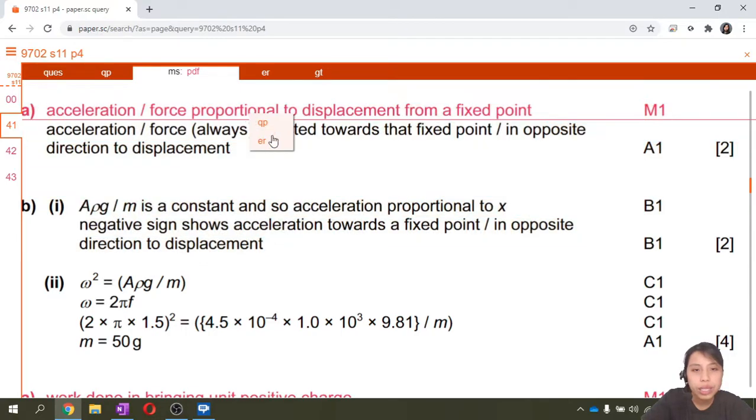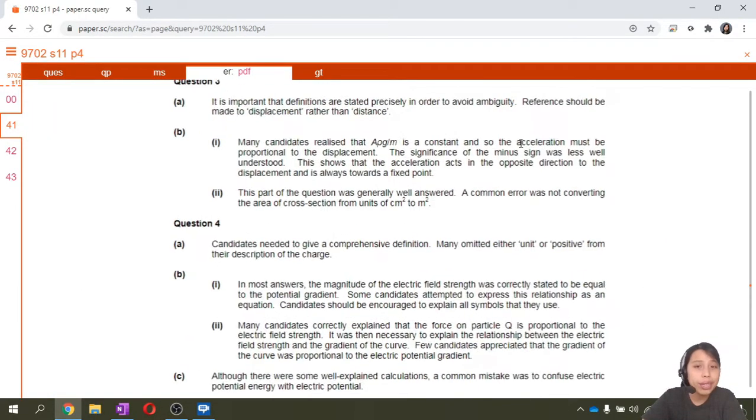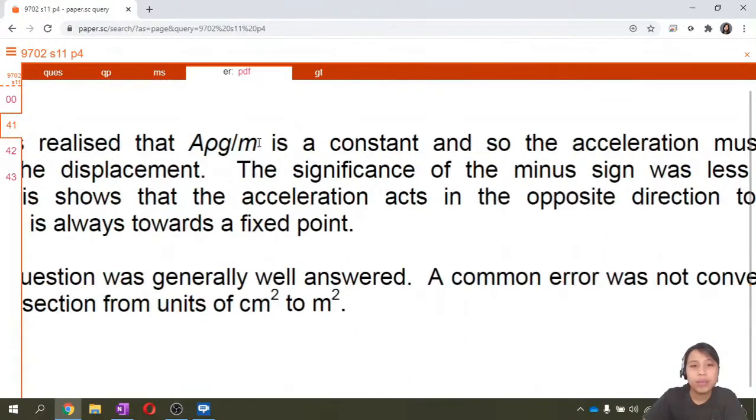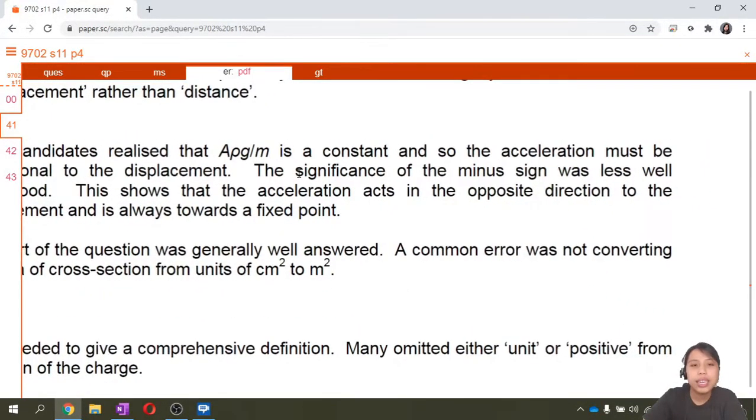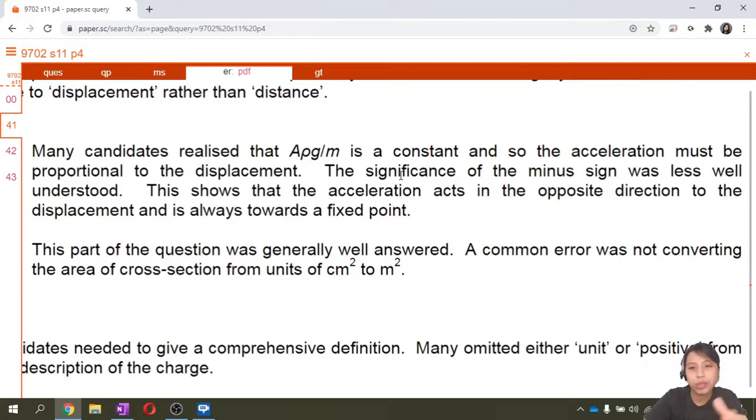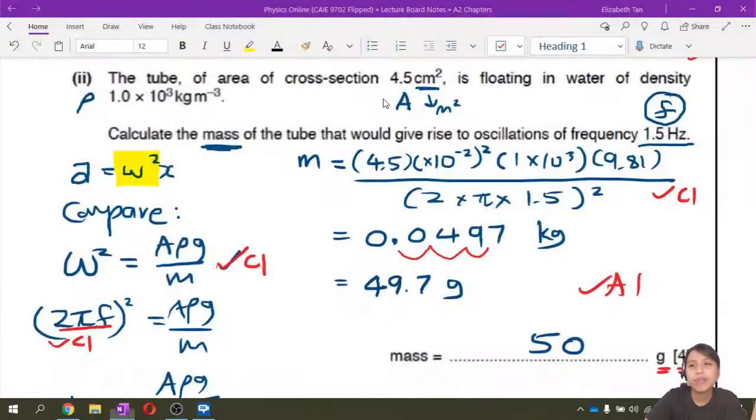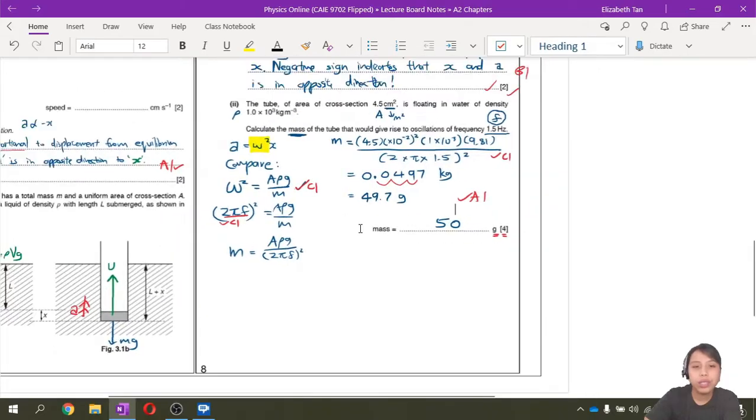Now before we move on to the next question, I'm going to take a peek at the error report to remind you that you can see what errors people usually make. Make sure you don't make those errors. Candidates realize that these are constants so the assertion must be proportional. But the significance of the minus sign was not very well understood. So you must mention why is there a minus sign, that's because opposite direction between A and X. You want to be a good candidate, right? And the next part, the calculation part, people usually can do. But please remember to convert your unit. See, they already warned you. People always forget to convert cm to m. So make sure you do that. So that's all for this question. There are a few more like this. Go try it out.